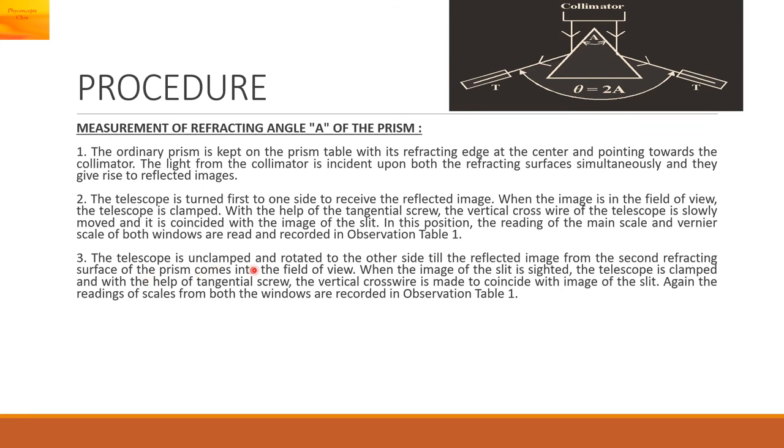The telescope is unclamped and rotated to the other side till the refracted image from the second refracting surface of the prism comes into the field of view. When the image of the slit is sighted, the telescope is clamped and with the help of tangential screw, the vertical cross wire is made to coincide with the image of the slit. Again, the readings of the scales from both the windows are recorded.